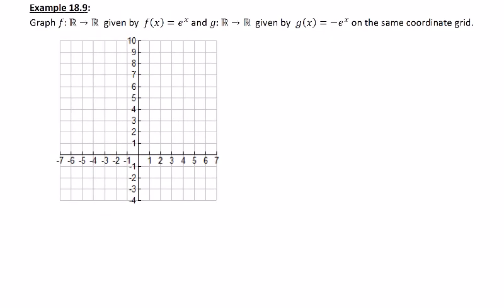In example 18.9 we're going to look at graphing f which is given by the equation f of x equals e to the x over a domain of all real numbers. We're also going to graph g on the same coordinate grid given by g of x equals negative e to the x, again over all real numbers.